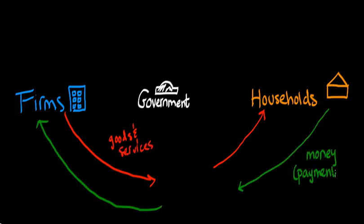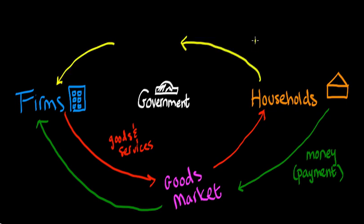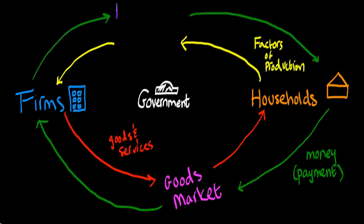That's called the goods market. However, the households get that money by providing the factors of production — land, labor, capital, and entrepreneurship — to the firms. That's called the factor market.